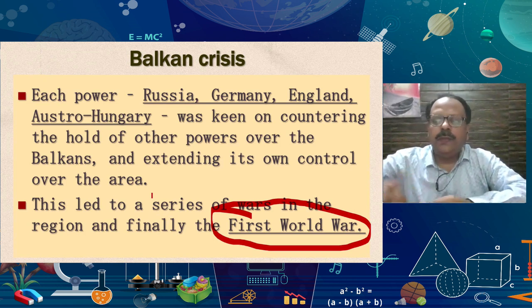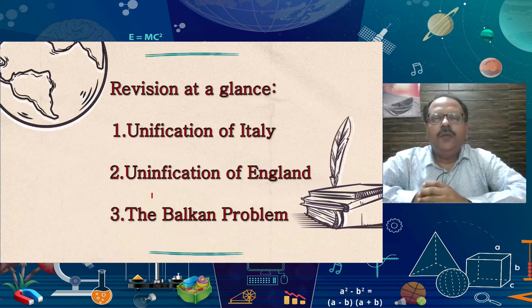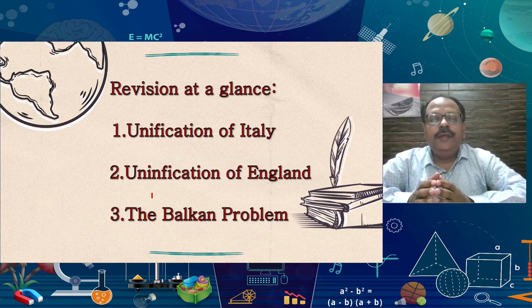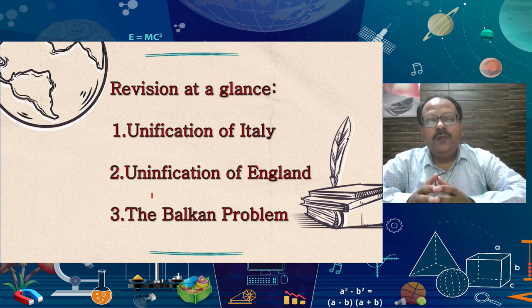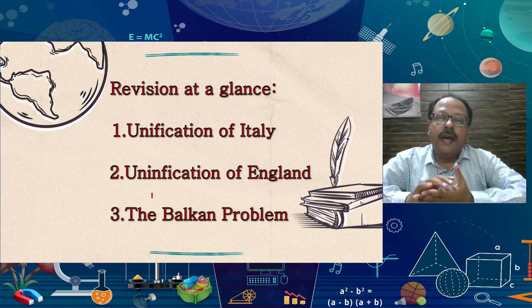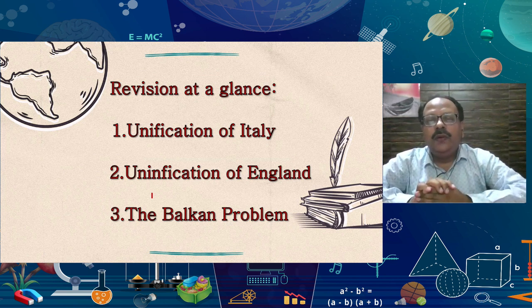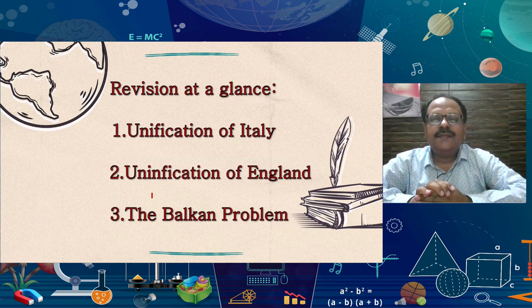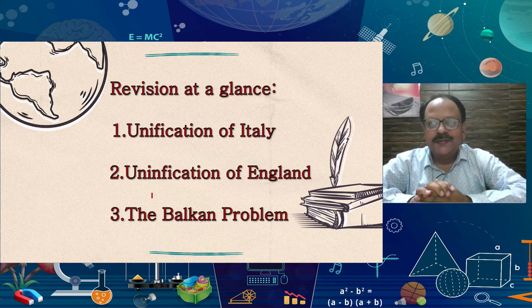This was all about this topic. What we learned today: we learned about the unification of Italy and the different roles of its leaders. Then we came to know about the unification of England — the Act of Union, the Glorious Revolution or Bloodless Revolution, and the imposition over Ireland. And ultimately, we learned about the Balkan Crisis. The whole topic of the Rise of Nationalism in Europe has been covered across these four parts, and we learned a lot of things throughout.